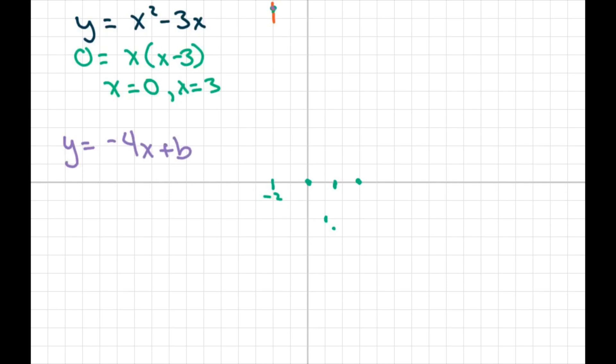And we had our two points, which was negative 2, 10 and 1, negative 2. So let's just use this one. So we have y is negative 2 equals negative 4 times 1 plus b. So we get negative 2 equals negative 4 plus b. Add the 4 to both sides and you get b is 2. So basically, that's your y intercept. There's your equation of your secant line.